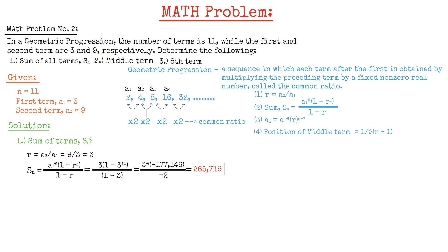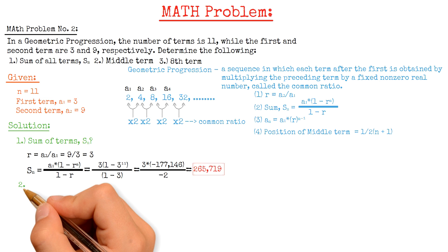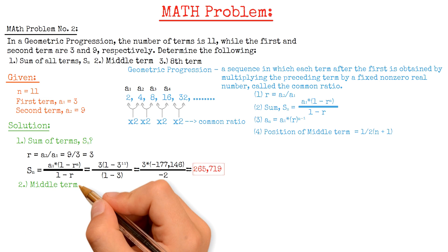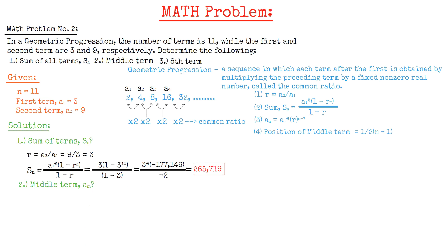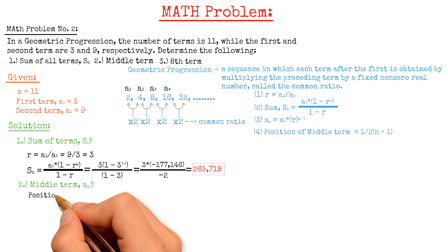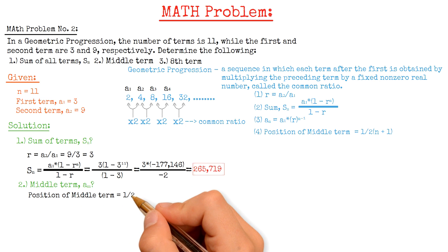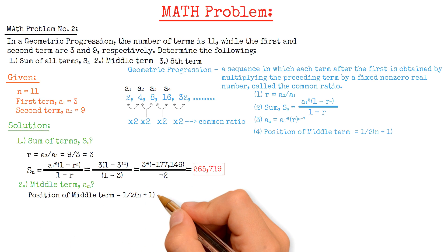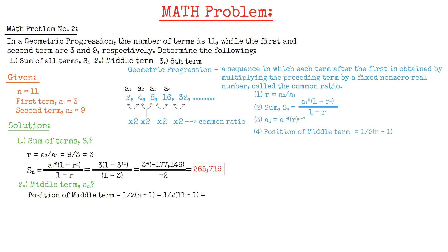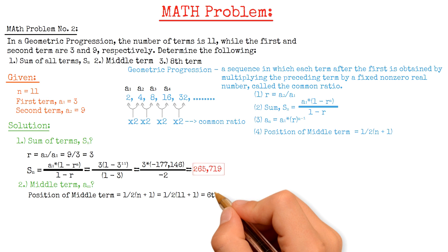Moving on to the next question, that is to find the middle term AM. First, we need to find the middle term position, which equals one-half multiplied by the number of terms 11 plus 1, and that gives us a value of 6. That means the position of the middle term AM is at the 6th term.